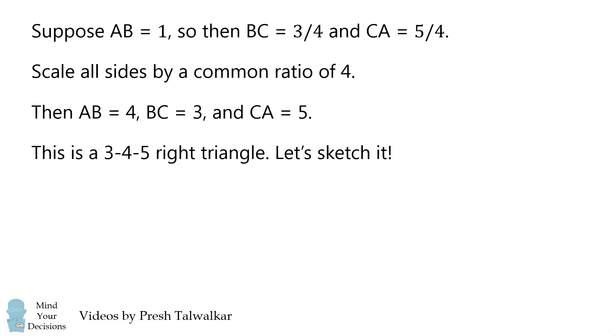We now have a familiar right triangle. This is a 3-4-5 right triangle, where AB is equal to 4, BC is equal to 3, and CA is equal to 5.